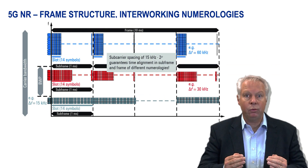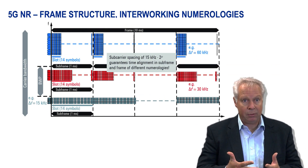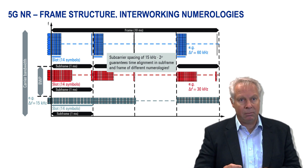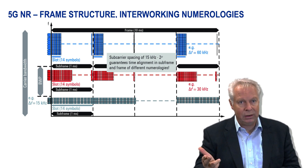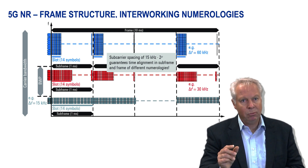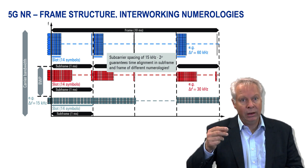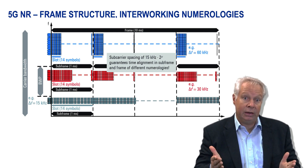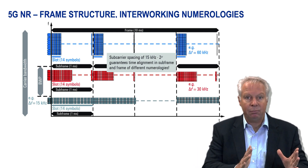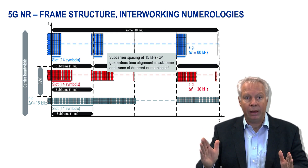More important is the mathematical definition of the numerologies and subcarrier spacings. The numbers 15, 30, 60, 120, etc., follow the formula: 15 kHz multiplied by 2 to the power of µ. The Greek symbol µ is simply an integer. So the subcarrier spacings are always multiples following powers of two.